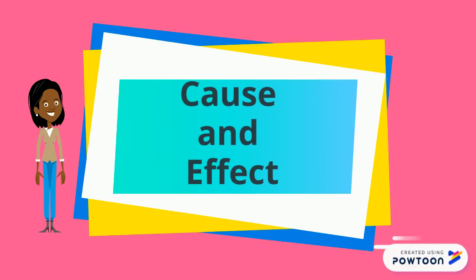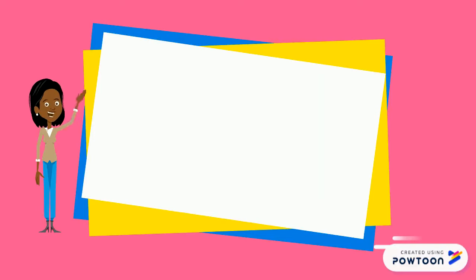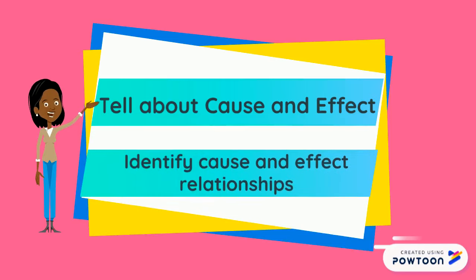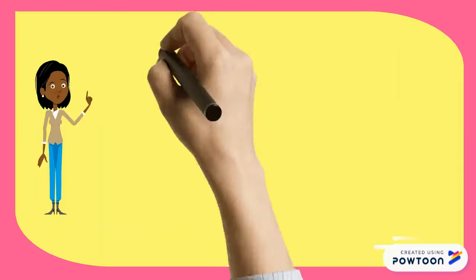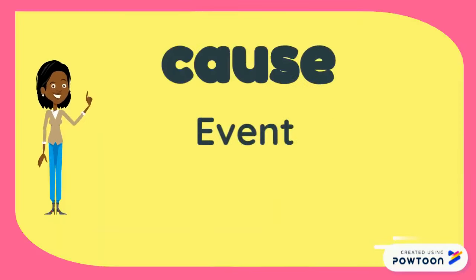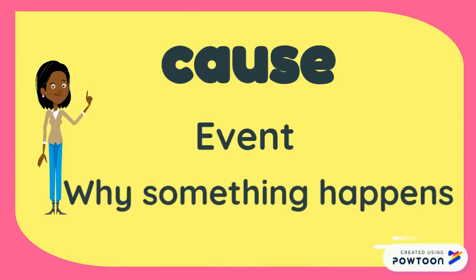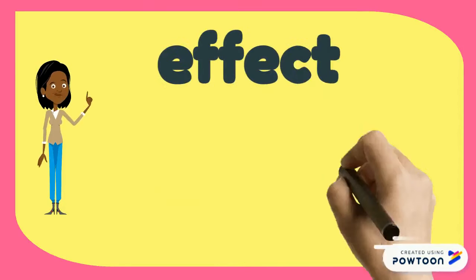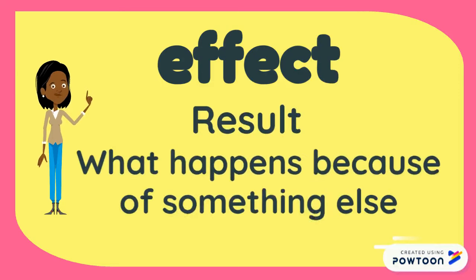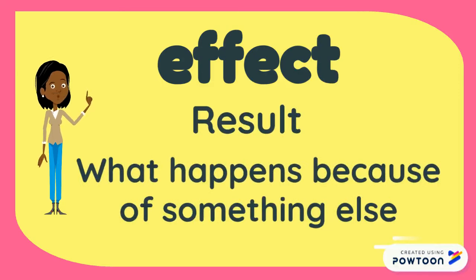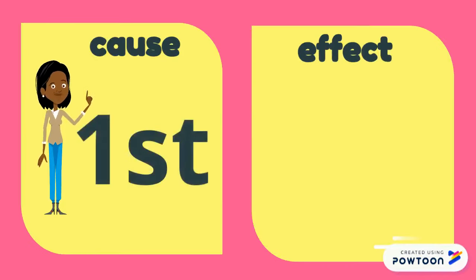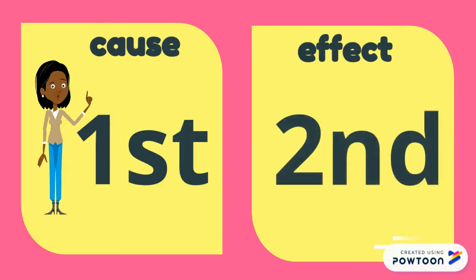Cause and Effect. You'll be able to tell about cause and effect and identify cause and effect relationships. The cause is the event — it is why something happens. The effect is the result — it's what happens because of something else. The cause will come first and the effect will happen after.